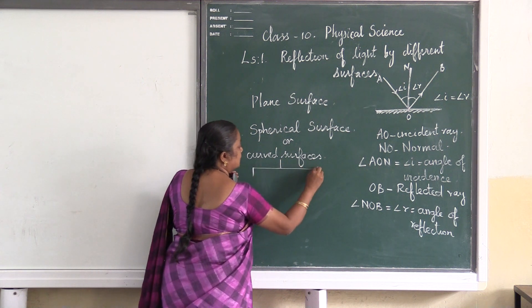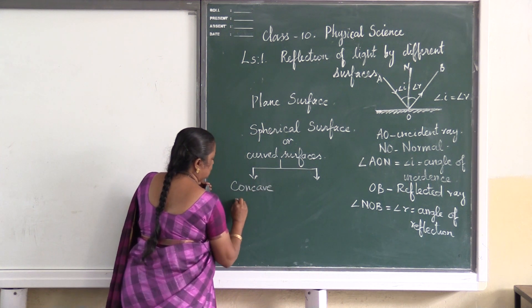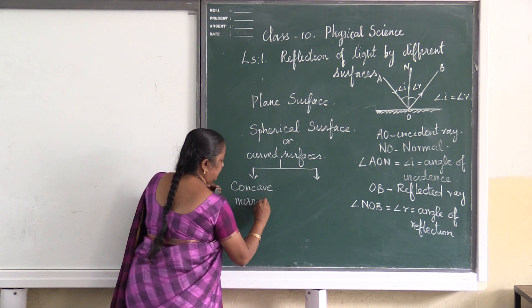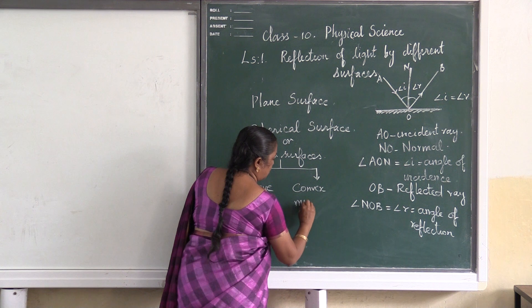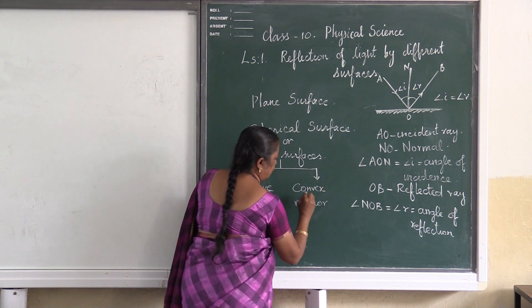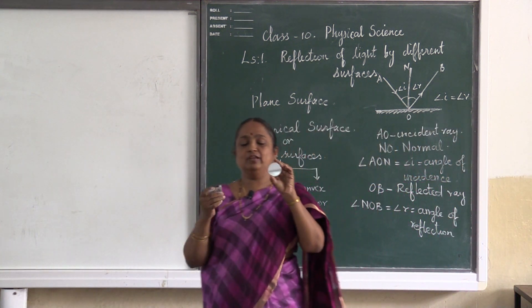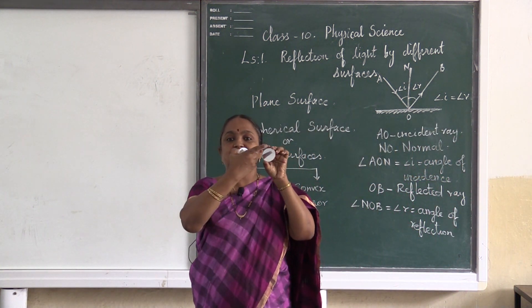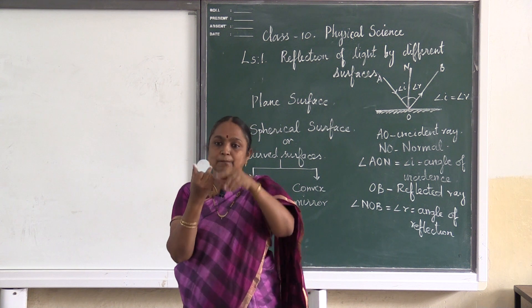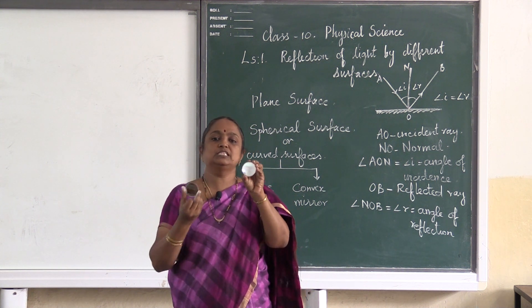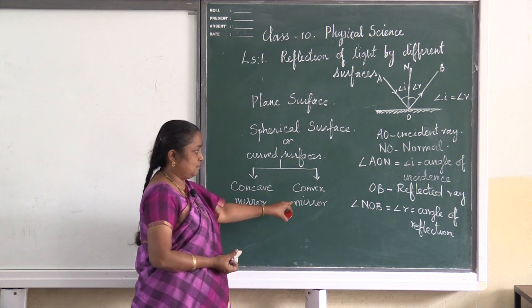Curved surfaces are classified into two types. One is a concave surface or concave mirror, and the other one is the convex surface or convex mirror. Let me show you the convex mirror also. In the concave mirror the reflecting surface is curved inside, whereas in the convex mirror the reflecting surface is bulged outside. Based on this we classify spherical or curved surfaces into two types — concave and convex mirrors.